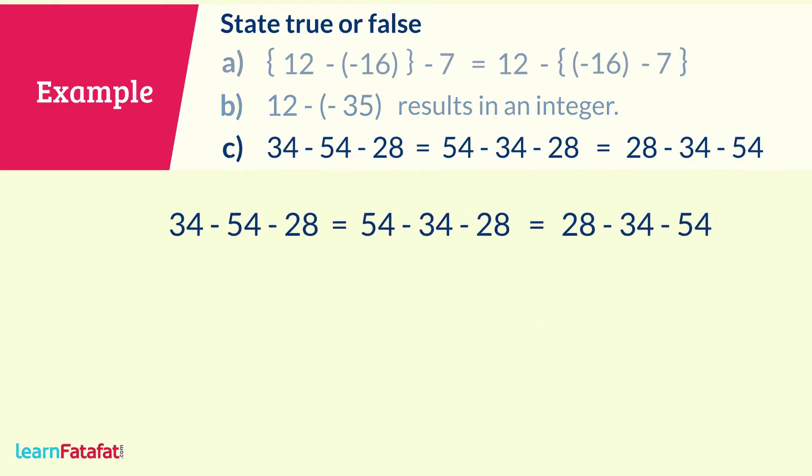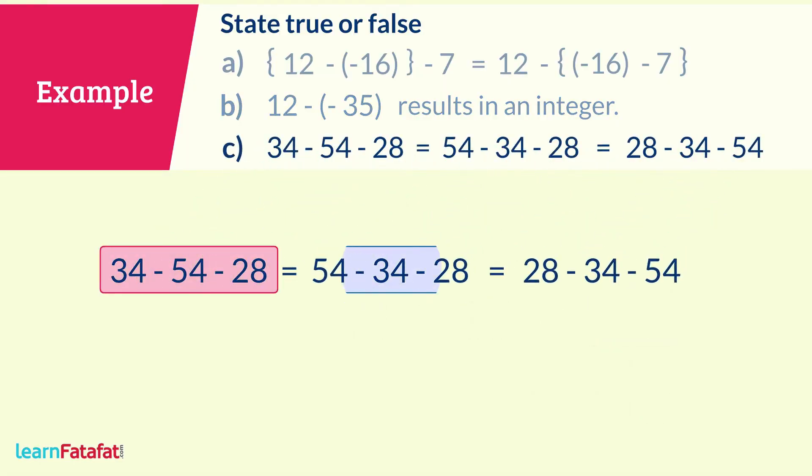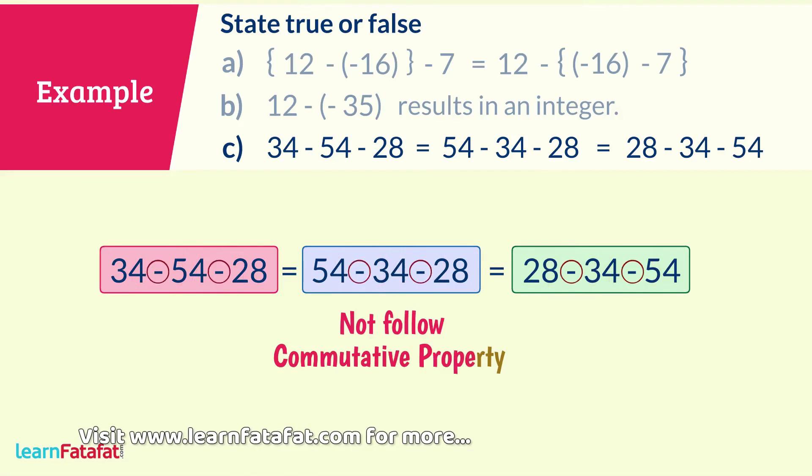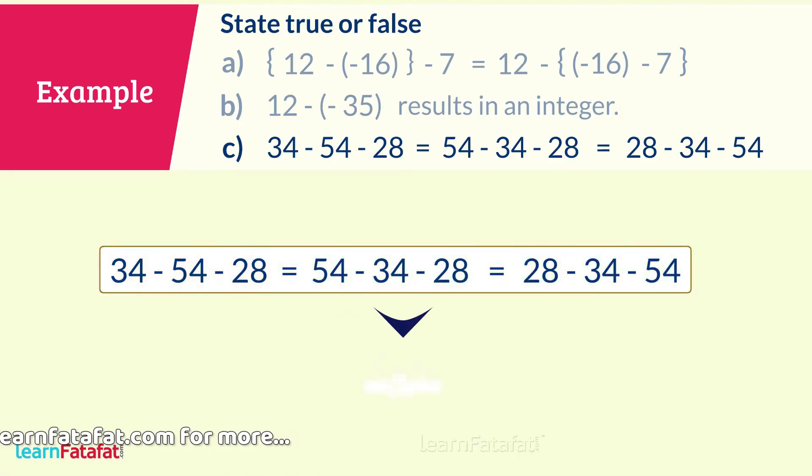Third, the statement shows various arrangements of numbers in the subtraction. The arrangement of numbers in a mathematical expression is related to commutative property. Subtraction does not follow commutative property. So, the given statement is false.